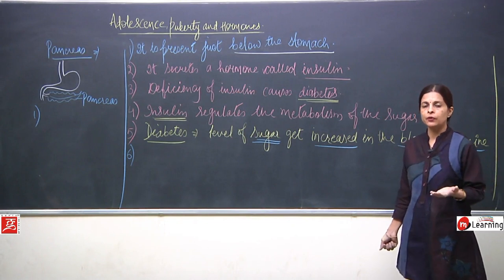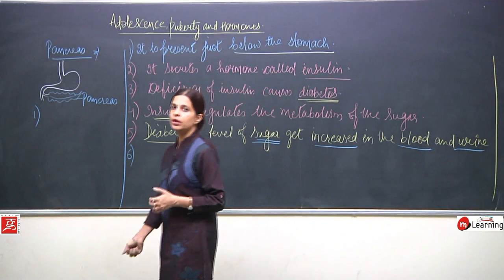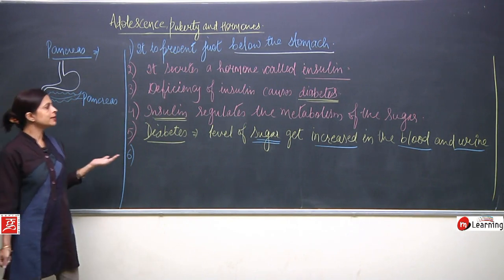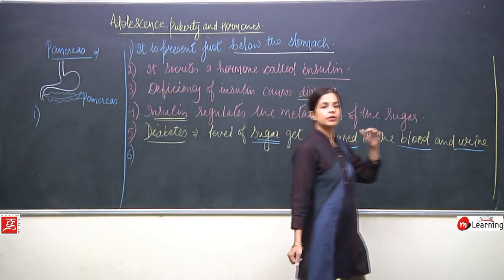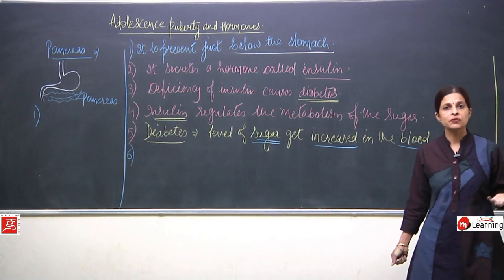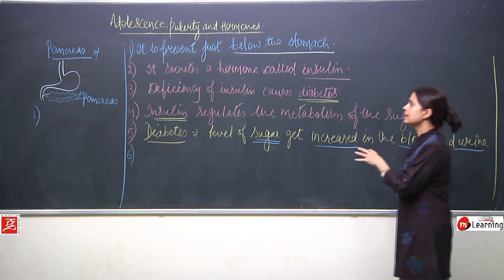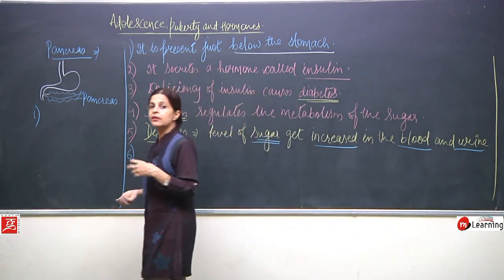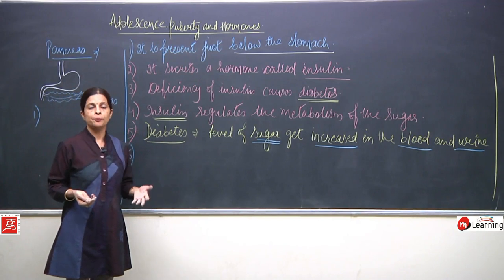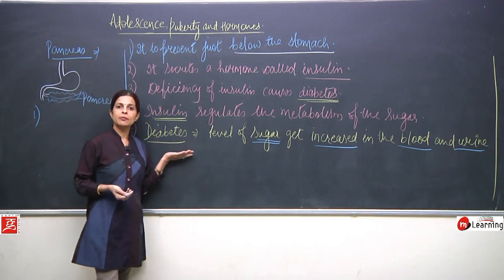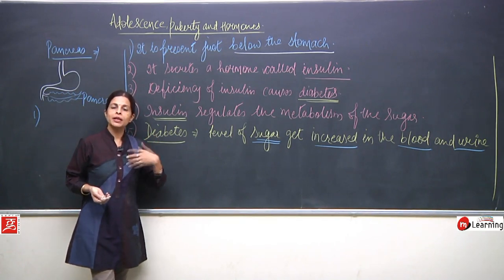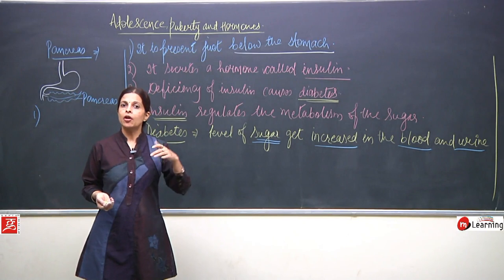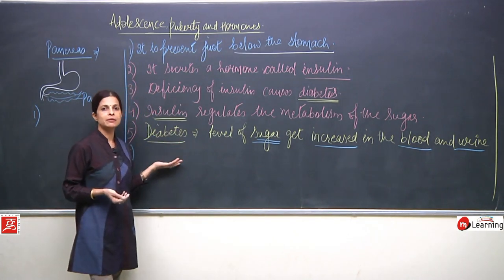If the hormone is secreted in more amount it is also not good. If insulin is secreted in excess, the person can even go into a coma because the sugar will keep getting broken down and the person won't have enough energy. There is a feedback mechanism which will be explained afterwards.